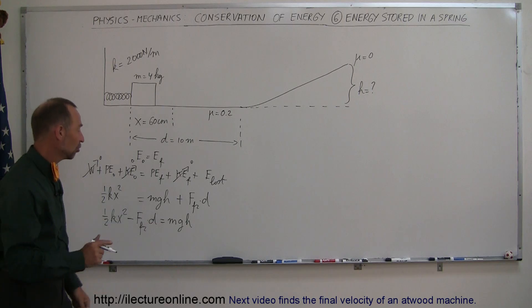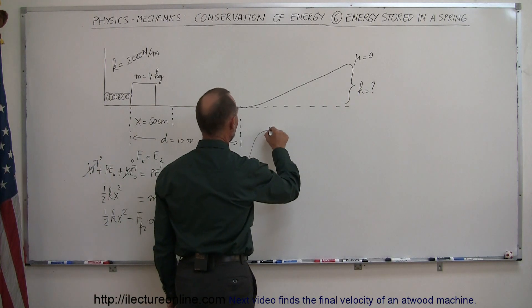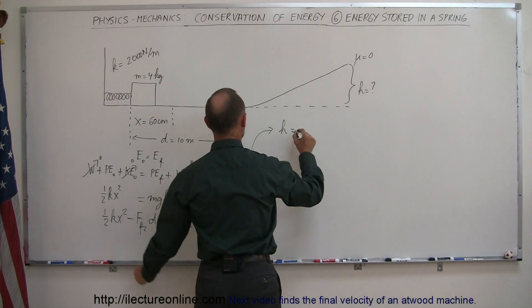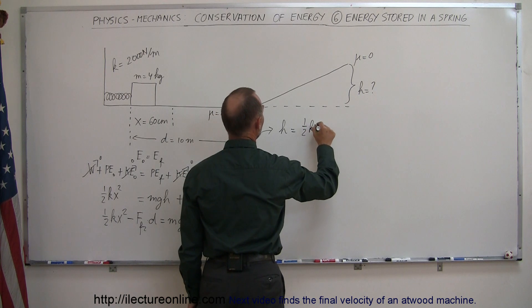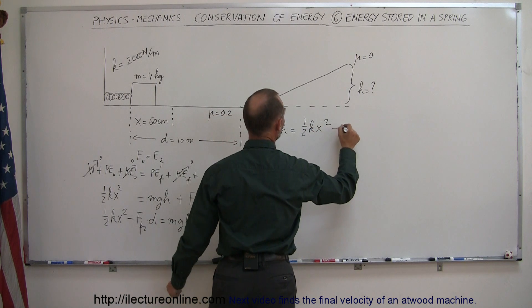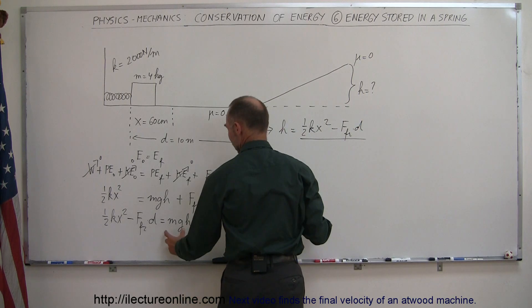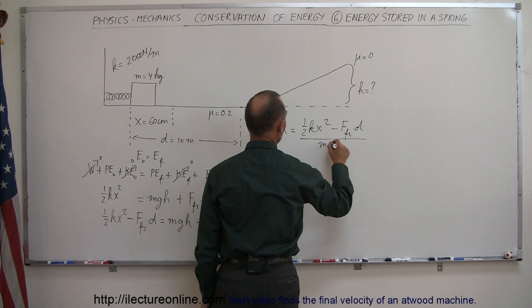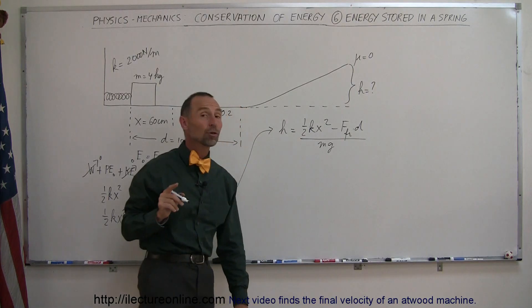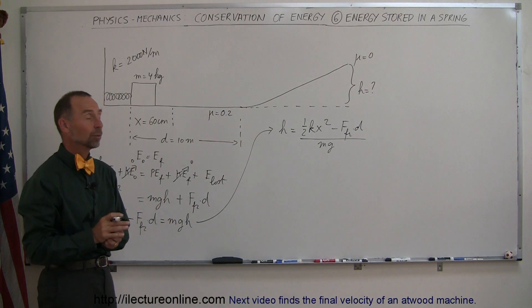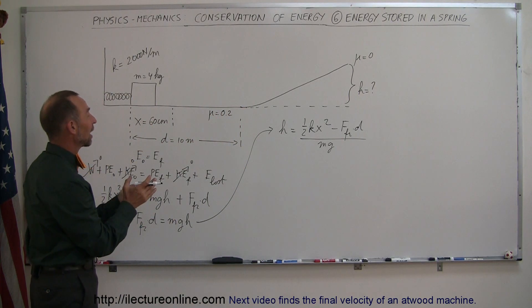We're now going to divide both sides by mg, so we can then say that h is equal to the left side of the equation, which is one-half kx squared minus force friction times distance divided by the coefficients of h, which is m times g. Now the only thing left to do here is find out what the friction force is equal to,